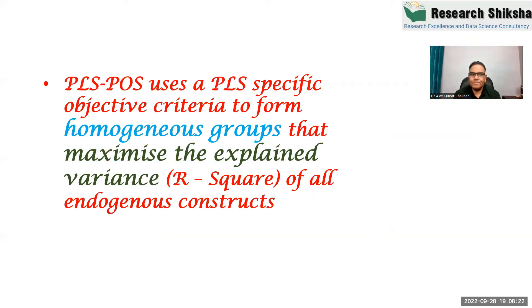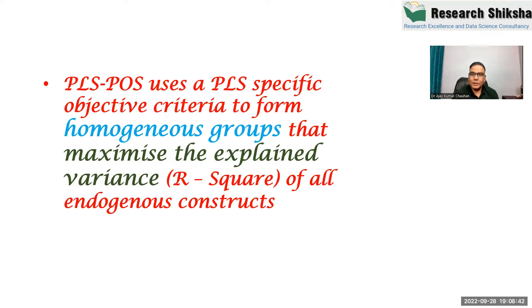POS is one of the algorithms provided by PLS, which divides the data into different homogeneous groups in such a way that the R square of the individual group will be maximized. This is the algorithm behind POS segmentation, and the most important point is that after segmentation, for each segment, the R square will increase.